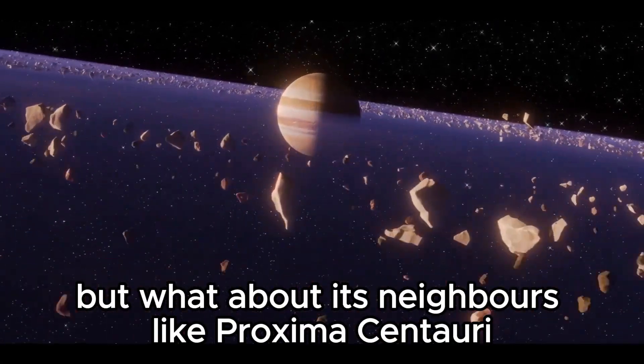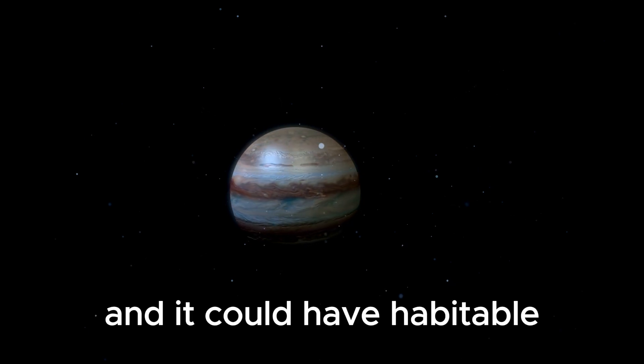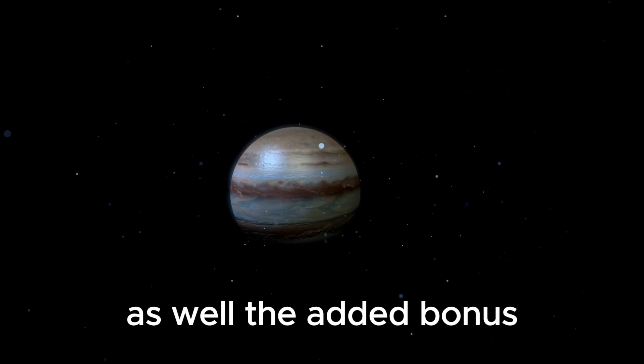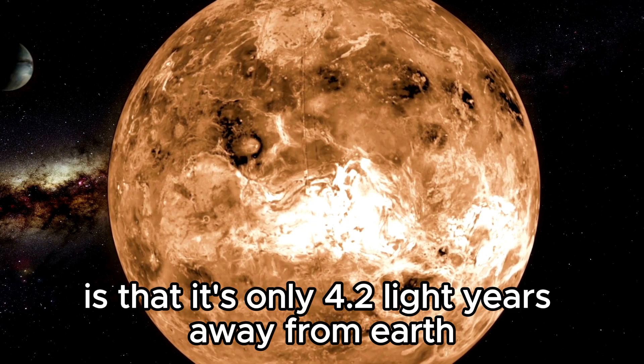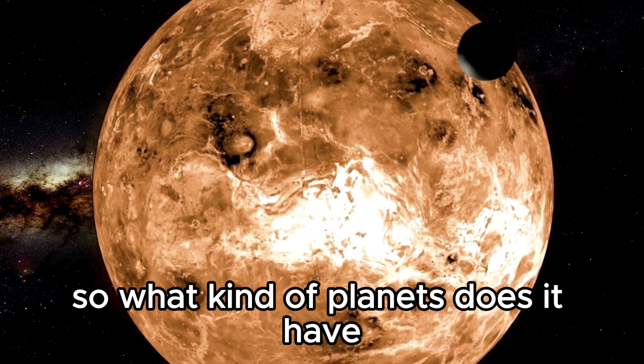But what about its neighbors, like Proxima Centauri? Proxima Centauri is a red dwarf, and it could have habitable or even superhabitable planets as well. The added bonus is that it's only 4.2 light-years away from Earth. So, what kind of planets does it have?